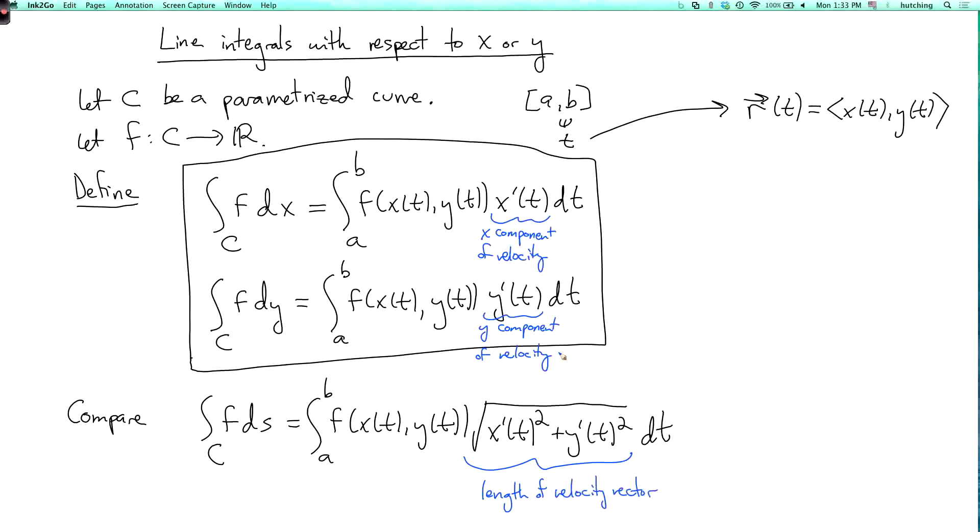Right, so we're always weighting f by something. Here, this weight is always positive, or unless we're stopped, in which case it's zero. So we have a non-negative weight. But here, x' and y' can be negative sometimes.